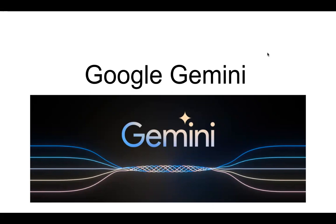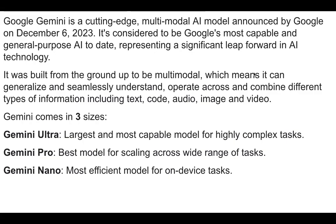Today, we are going to talk about the latest entrant in the AI race — it's Gemini, from Google. Let me tell you in a short video what this AI is about. Gemini is a cutting-edge, multi-modal AI model announced by Google on December 6th. It's the most capable general-purpose AI to date — a significant leap forward in AI technology.